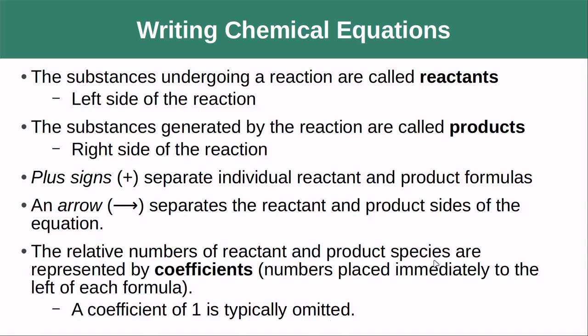The relative numbers of reactant and product species are represented by coefficients and what these are are numbers that we placed immediately to the left of each formula. We're going to talk a little bit more about what the coefficients are but an important rule of thumb to keep in mind is that a coefficient of 1 is typically omitted and the reverse of that logic is that when you don't see a coefficient you should assume that it is 1.